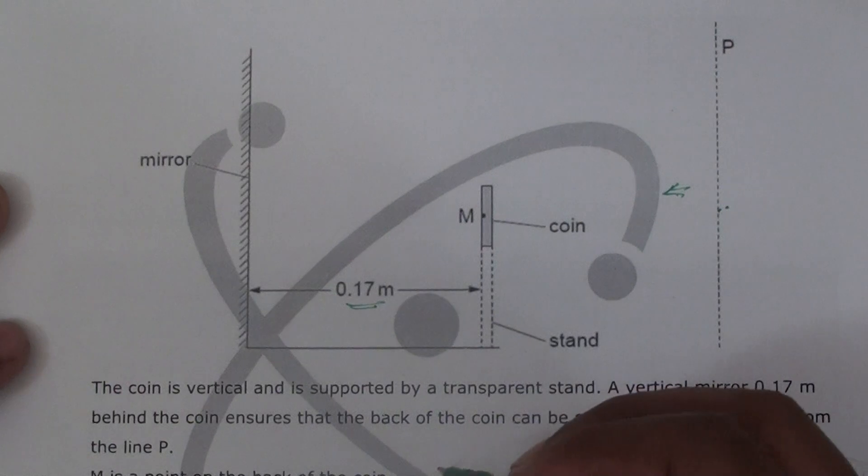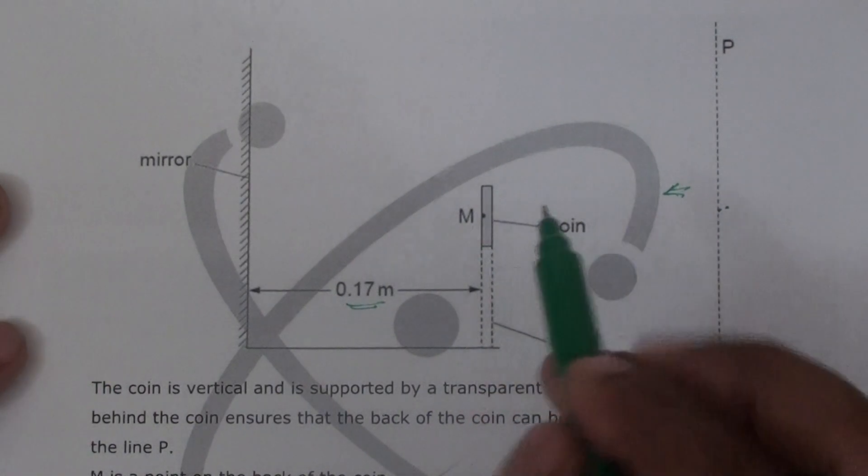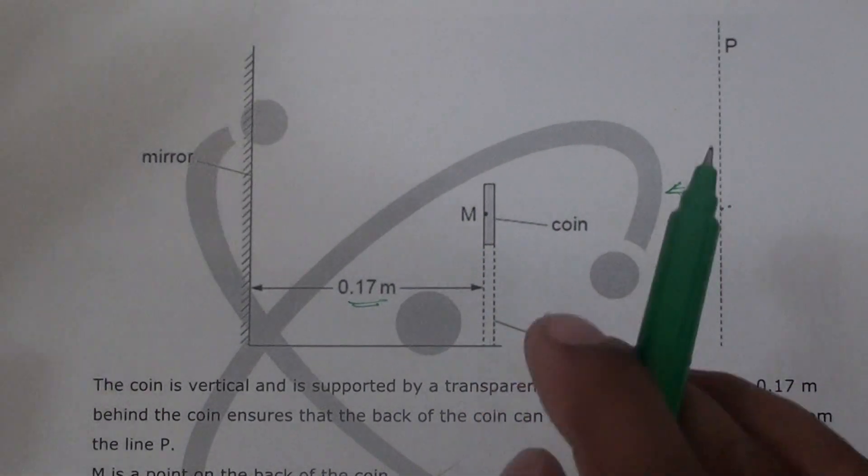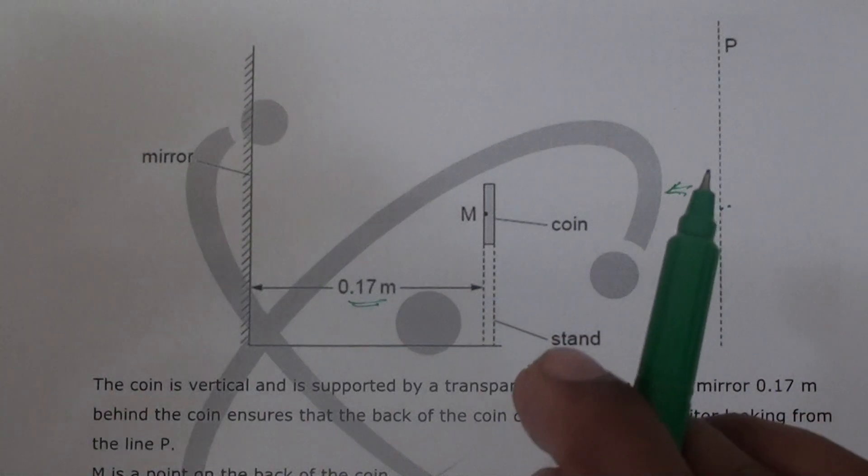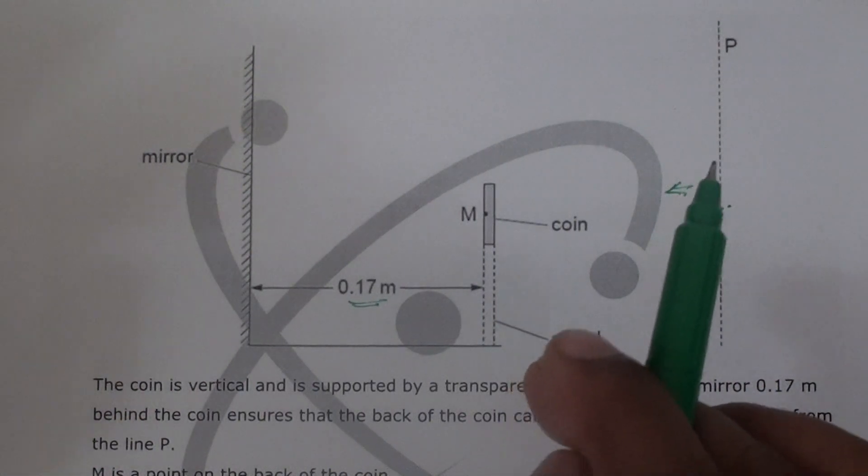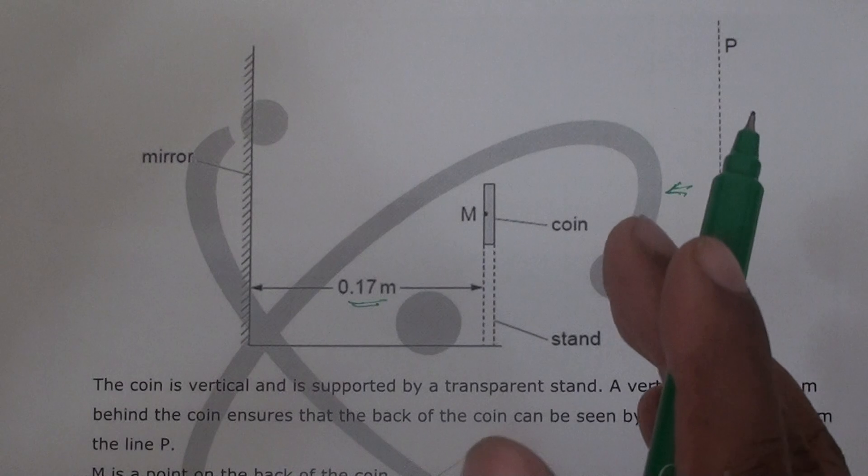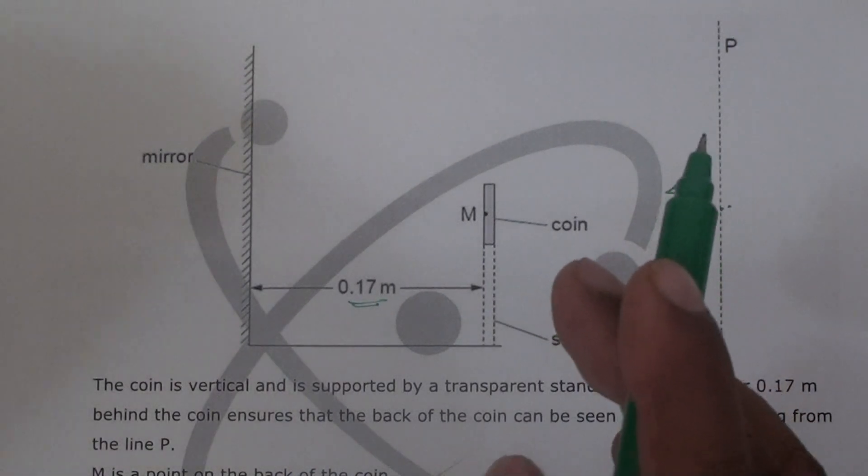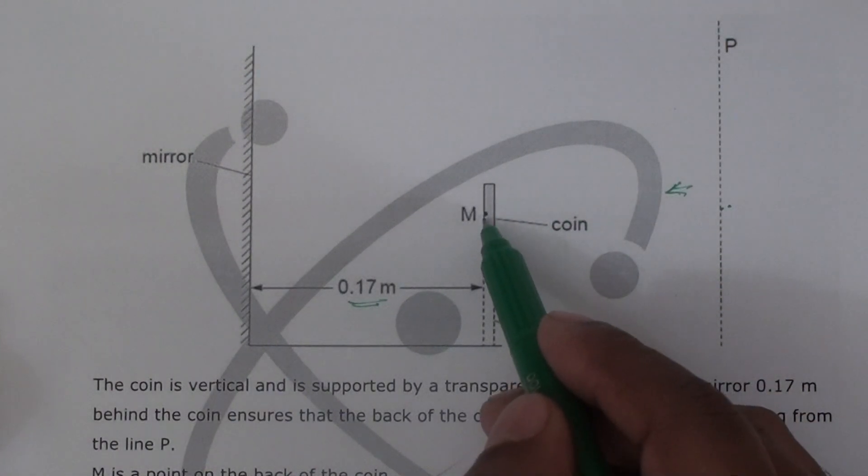M is a point on the back of the coin. Here, one point. Remember when we draw rays in reflection, we don't worry about the whole object. We talk about points.